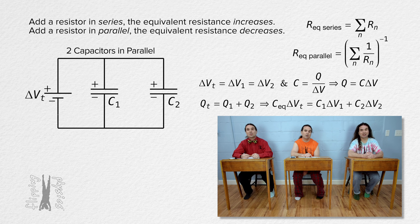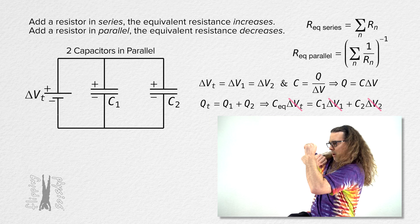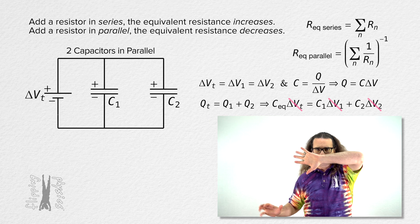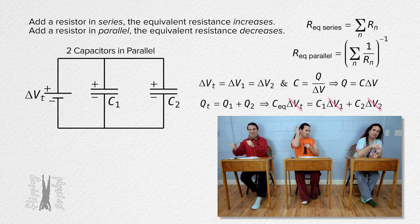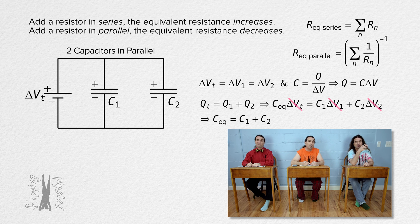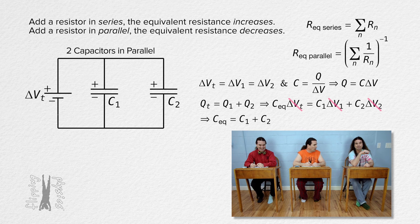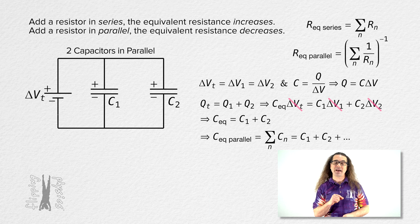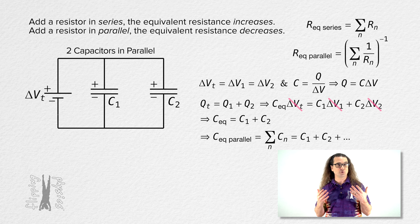And because the electric potential differences are all equal, everybody brought electric potential difference to the party! We get that the equivalent capacitance of two capacitors in parallel equals the sum of the capacitance of the two parallel capacitors. A more general equation for the equivalent capacitance of n capacitors in parallel equals the summation of the capacitance of n number of capacitors — you just add up the capacitance of all the parallel capacitors.